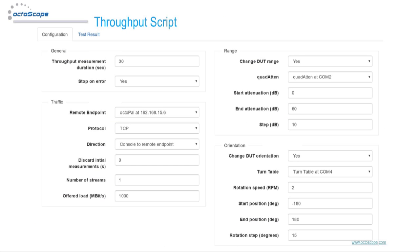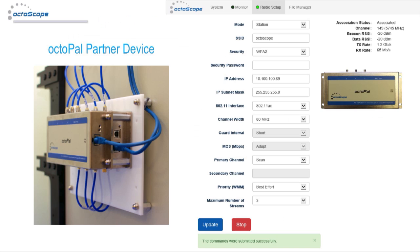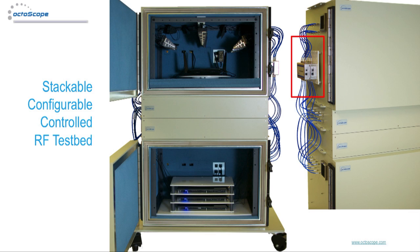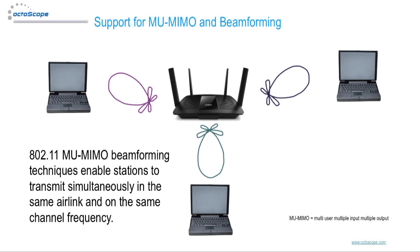Octopal is a key instrument for many important tests including throughput, packet error rate, jitter, data rate adaptation, channel adaptation, and other tests. The Octobox testbed is stackable and configurable. All Octobox models provision an excellent MIMO environment for devices in the test network, while stackable modules such as the multipath emulator, iGen, and Octopal are connected as needed for a variety of tests. Shown here is an 8x8 MIMO test configuration that supports both multi-user MIMO and beamforming. Multi-user MIMO is difficult to test in open-air or in walk-in isolation chambers due to the motion of humans, but Octobox offers a completely repeatable environment for MU-MIMO testing.